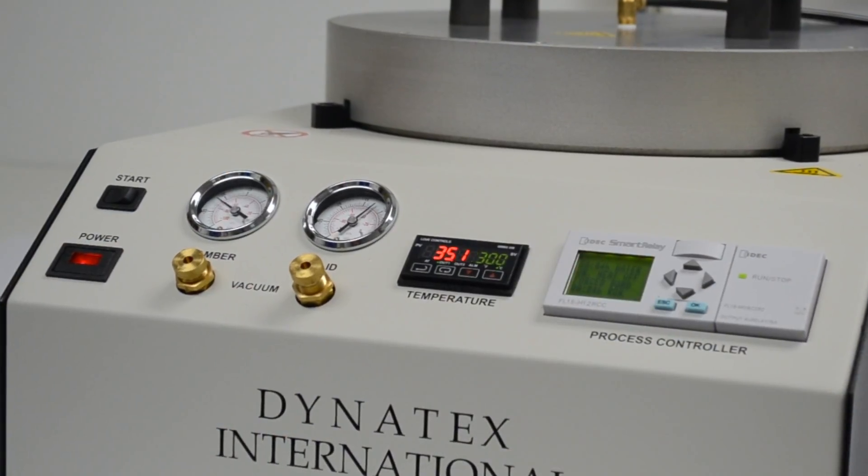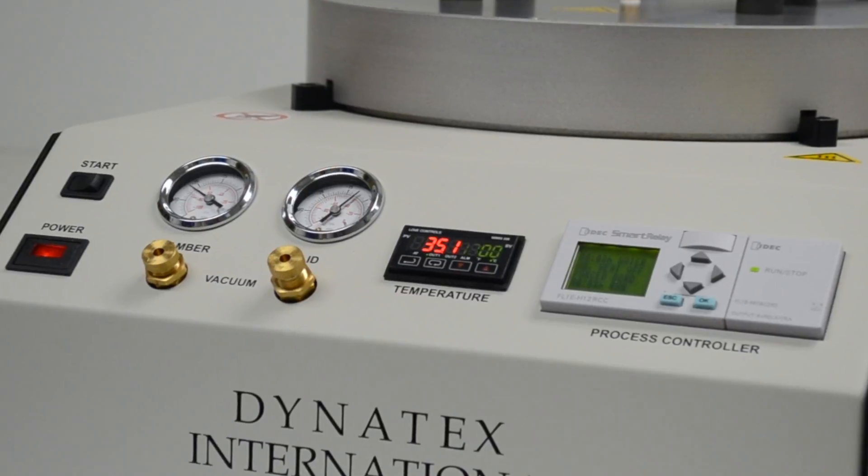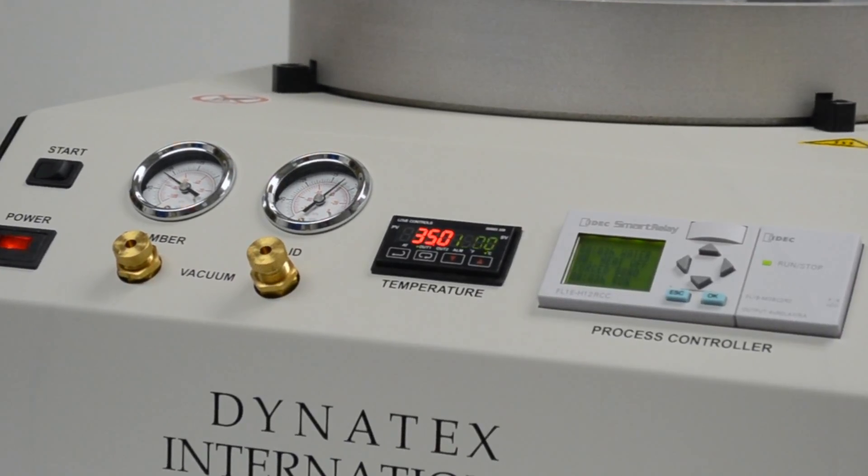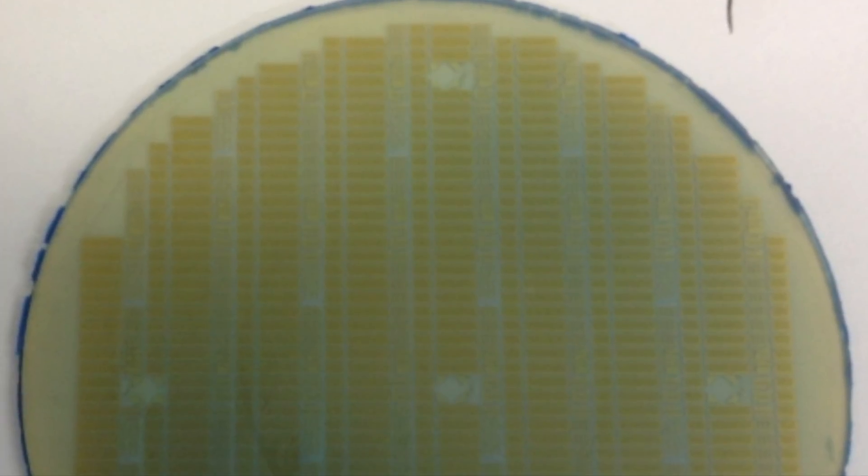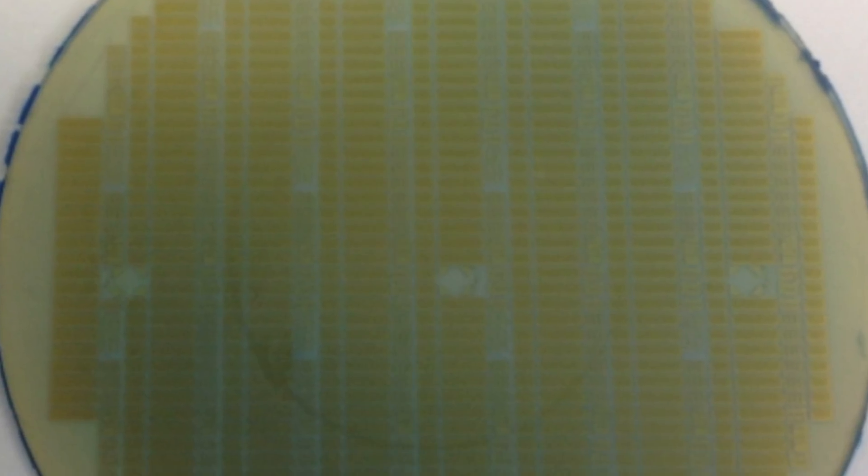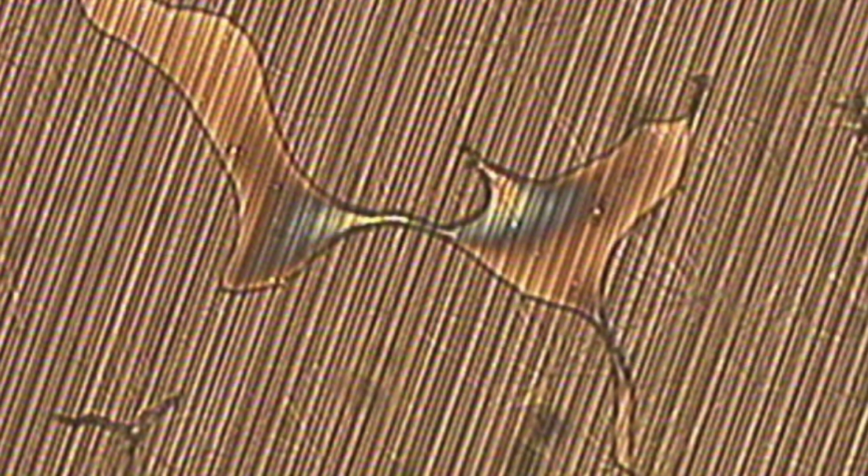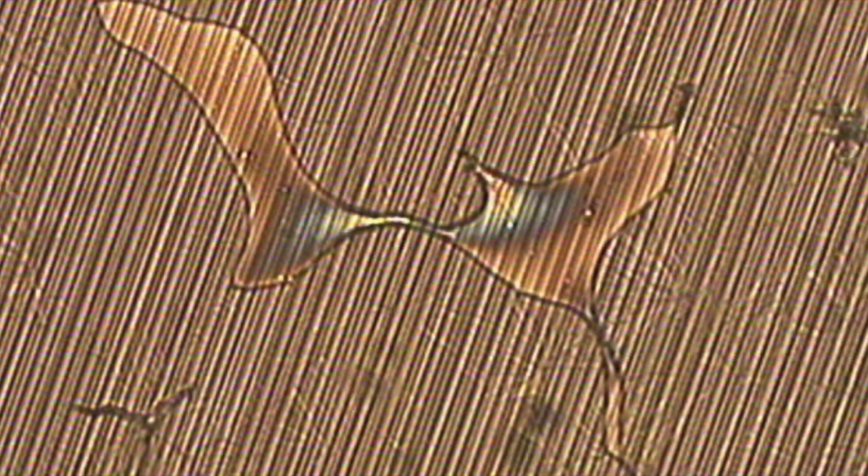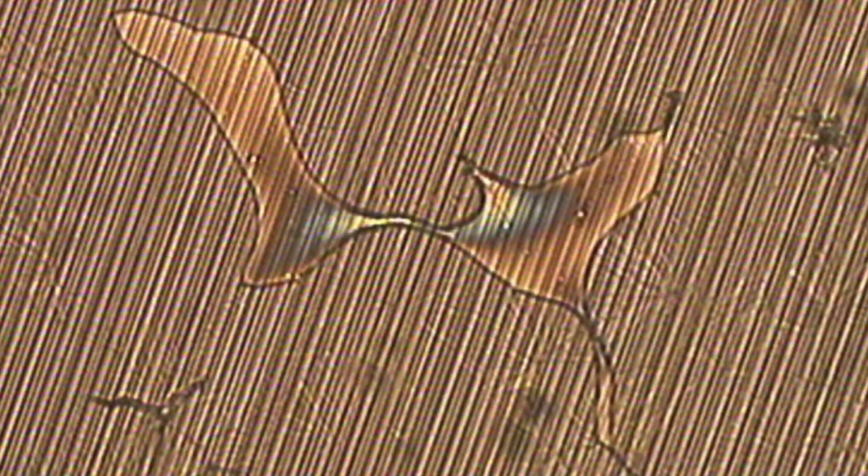The DXB880 is also optimized to allow for void-free wafer bonding. During wafer bonding, one of the most difficult challenges to overcome is the elimination of voids trapped in the bond between the substrate and the wafer. Void-free wafer bonding is important because in many wafer dicing and thinning processes, having a void in the bond will create a significant decrease in yield.